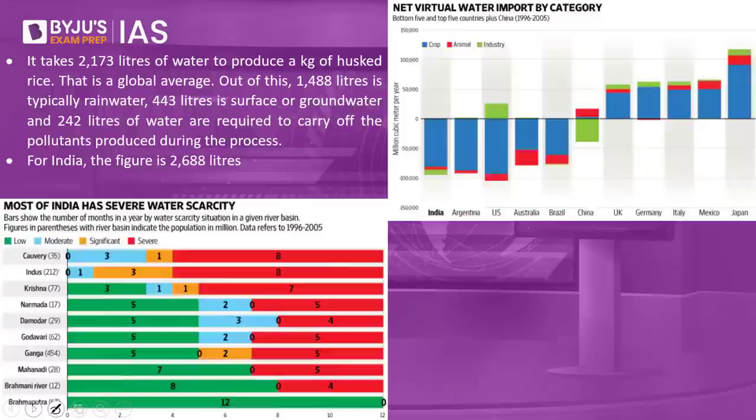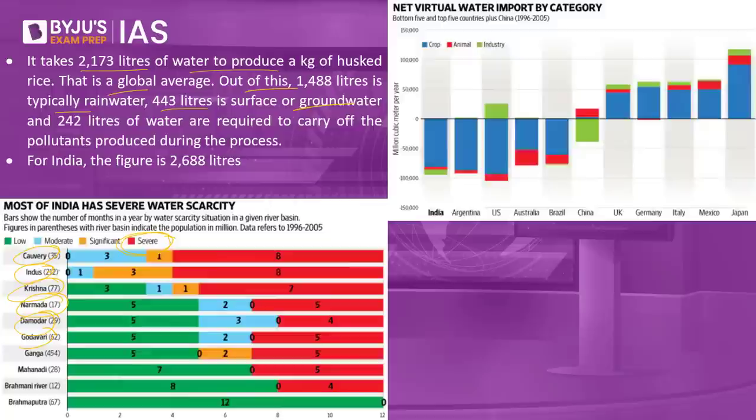Whenever rice and paddy has to be grown, it requires a constant supply of water — the entire area has to be flooded. But India is already water scarce. Rivers like Kaveri, Indus, Krishna, Narmada, Damodar, and Godavari are already facing scarcity in some seasons. It takes about 2,173 litres of water to produce a kilogram of husk rice globally — of which 1,488 litres is typically rainwater, 443 litres is surface or groundwater, and 242 litres is required to carry off pollutants produced during the process.